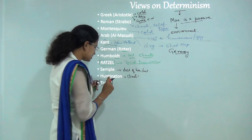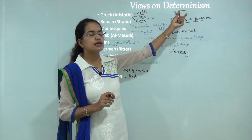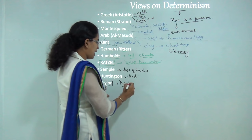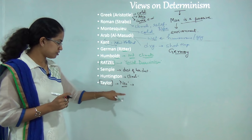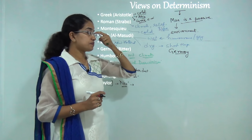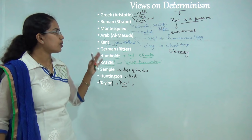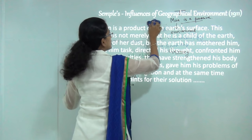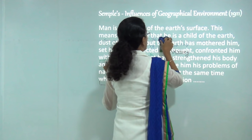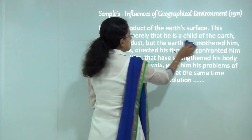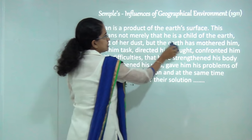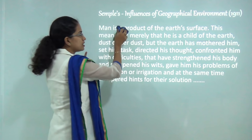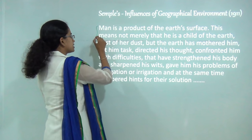Taylor's new concept was called neo-determinism, also later known as 'stop and go determinism.' Determinism has also been known as environmental determinism, climatic determinism, or geographical determinism. Semple's extract is considered one of the major works promoting determinism, where she said 'man is a product of the earth's surface' — not merely the child of the earth but the 'dust of her dust.' This passage has been asked in numerous examinations and has been a foundational text for the concept of determinism.